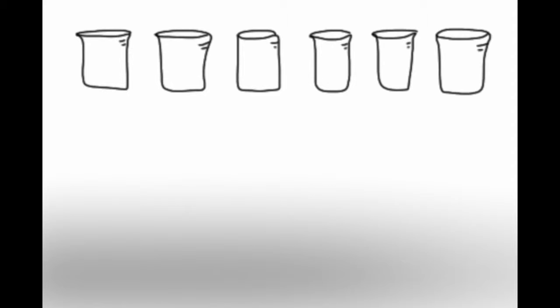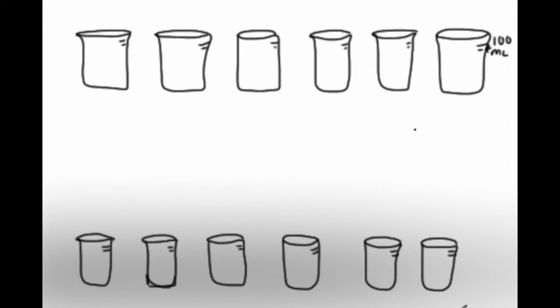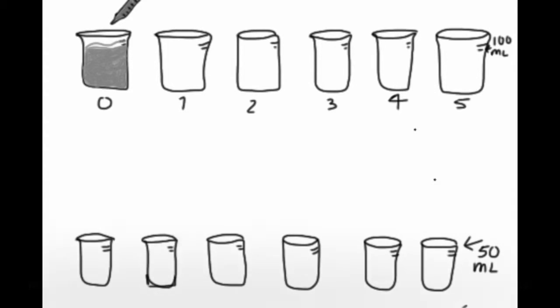Take six beakers that can hold up to 100 milliliters and six beakers that can hold up to 50 milliliters. Label the first set of beakers 0 to 5. Fill beaker 0 with 100 milliliters of 1.0 molarity hydrogen chloride.